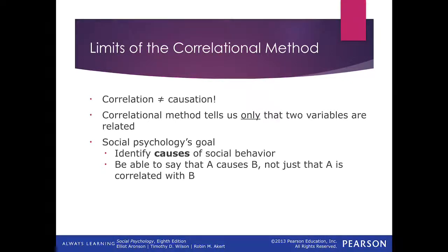We talked about correlation and the fact that the correlational method looks at the relationship between two variables and how they change systematically. As one variable increases, the other may decrease — that's a negative relationship. As one increases and the other increases — that's a positive relationship. If there's no relationship, we see a very scattered scatter plot and a pretty horizontal line. That's just a little bit of a recap.